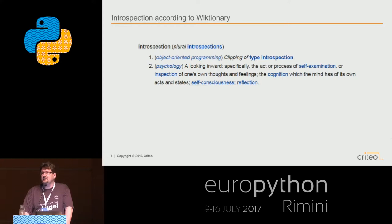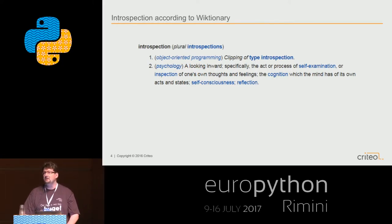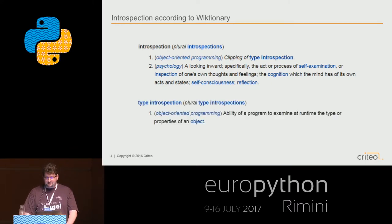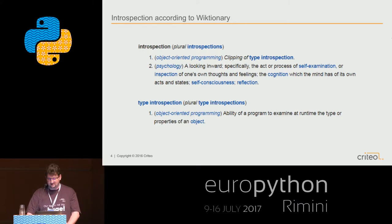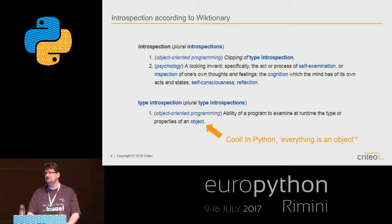What is exactly introspection? Let's go back to the dictionary. Introspection has two possible meanings: one in psychology and the other in object-oriented programming. The OOP definition is the ability of a program to examine at runtime the type or properties of an object. That's cool, because in Python everything is an object. A function is an object, a class is an object, everything is an object. So you can go and look everywhere in the different elements of your code.